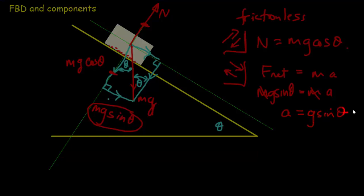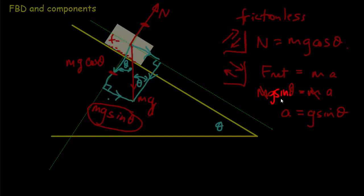For example, if theta equals 30 degrees, we get an acceleration of half of g, or about 4.9 meters per second squared. If we add some friction, we'd throw it into the equation: mg sine theta minus friction force f equals mass times acceleration, which makes the acceleration a little bit less.